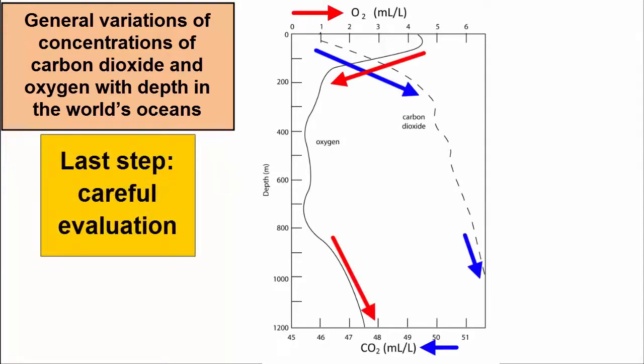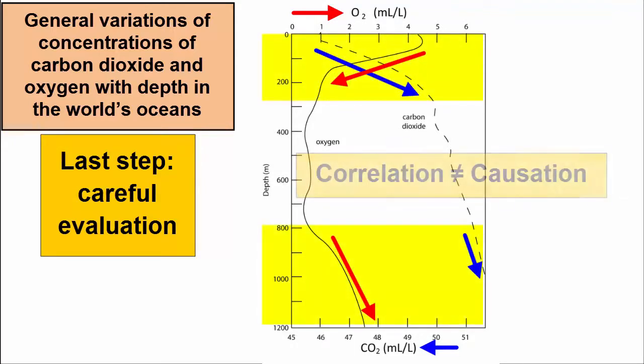Only after a thorough observation of the data should we start evaluating what it might mean. If two characteristics correlate in their data trends, there might be a relationship between the two characteristics. It might be that one causes the other, or it might mean that the cause of one is also the cause of the other. Correlation does not equal causation, but it can lead us toward the causes.